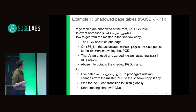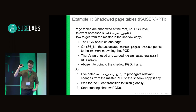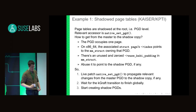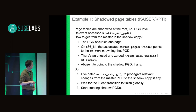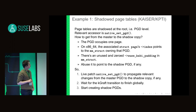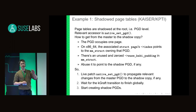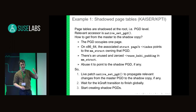For Meltdown, we would have to install the shadow page tables. The page tables are shadowed at the root level — that is the page global directory level. The only accessor which is relevant here is native_set_pgd, and this must be made to propagate any changes from the master page tables to the shadow page tables to be used in user space.